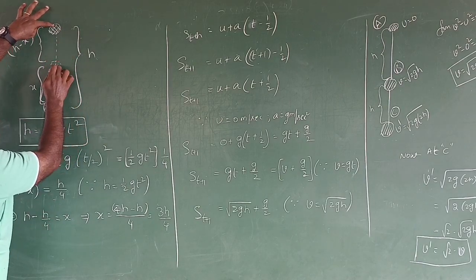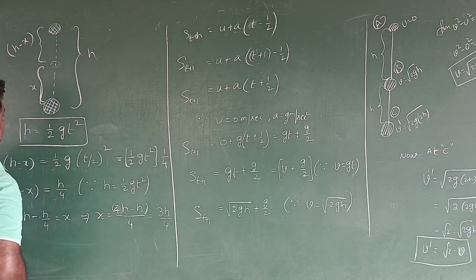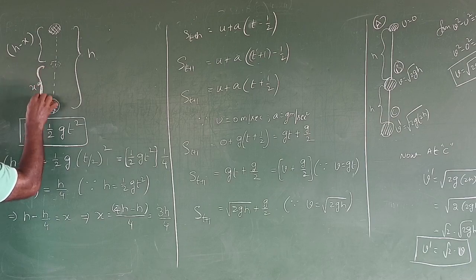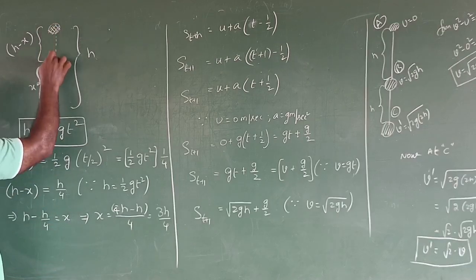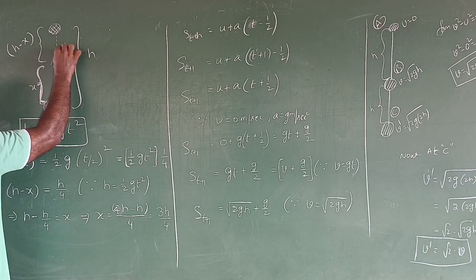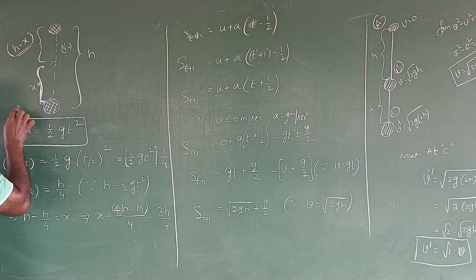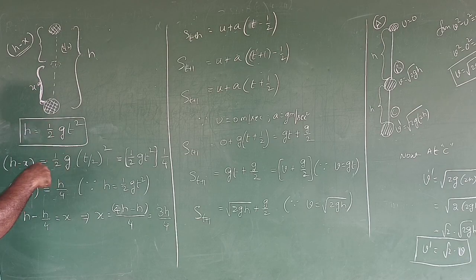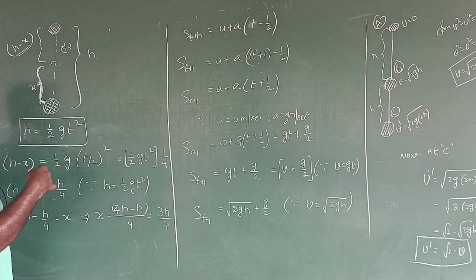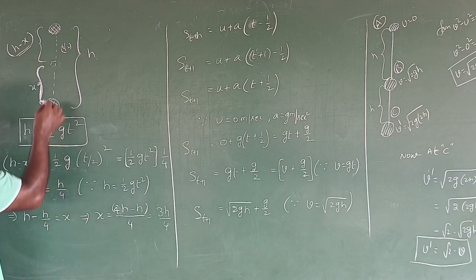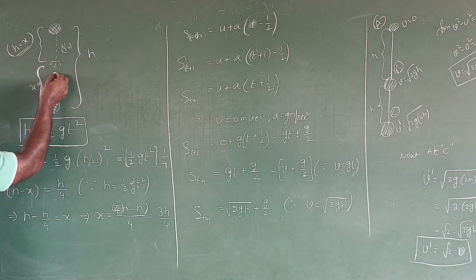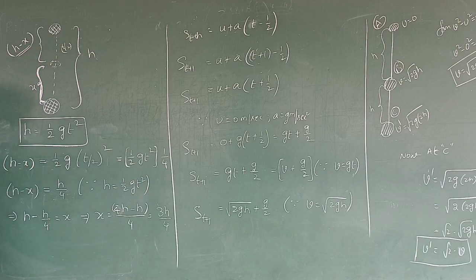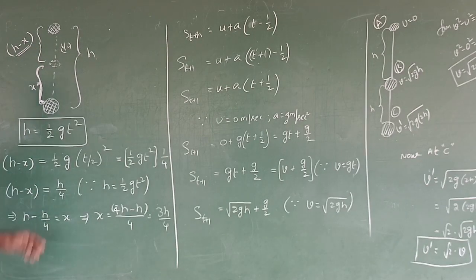For example, what is this distance? Suppose you are taking x as the distance from the ground. When it is falling for half of the time, half of the time it travels a distance of h minus x. After half of the time, suppose the body is at a height of x from the ground, then the remaining distance is h minus x.